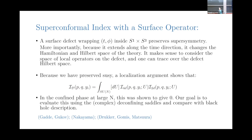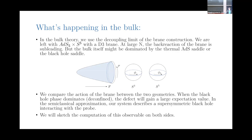What's going on in the bulk? In the bulk theory, we have the decoupling limit of the brane construction. When we take large N, the back reaction from the N D-branes collapses and gives us AdS5 cross S5, or these geometries that are asymptotically AdS5 cross S5. Because there's a single probe, we end up with a D3-brane that sits in the bulk. Depending on how we tune the chemical potentials, the bulk might be dominated by the thermal AdS saddle or it might be dominated by the black hole saddle. When the background bulk fields are such that the black hole saddle dominates, the configuration we have is an extended version of the Wilson loop picture — the probe D3-brane wraps the Euclidean cigar, the part of the geometry which approaches AdS2 in the physical limit.